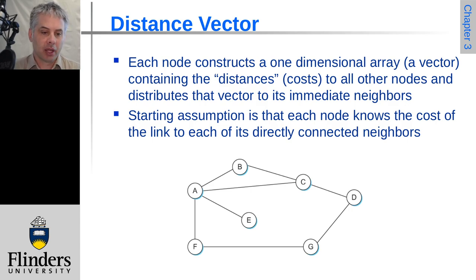Each node constructs a vector that contains the distances, the costs is really what we mean there, by the distance to all other nodes in the network. Then it shares that around with its immediate neighbors.